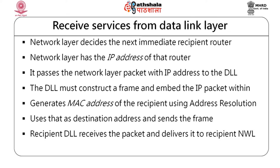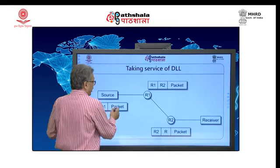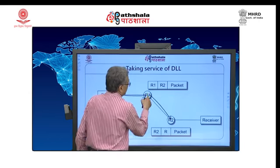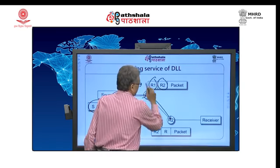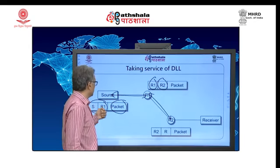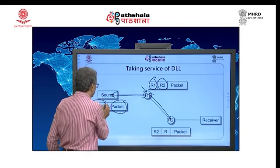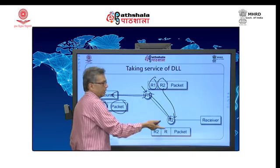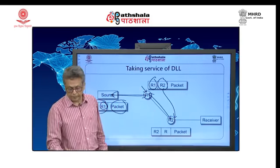The recipient data link layer takes out the network packet and passes it on. Every time the frame changes — between sender and R1, between R1 and R2 — the packet itself is not changing, but the sender and receiver addresses of the frame change. These addresses are found from IP addresses: the network layer finds the next router's IP address, which is resolved via ARP to get the physical MAC address. The same way, R2's physical address is calculated using ARP, and the frame is constructed similarly.